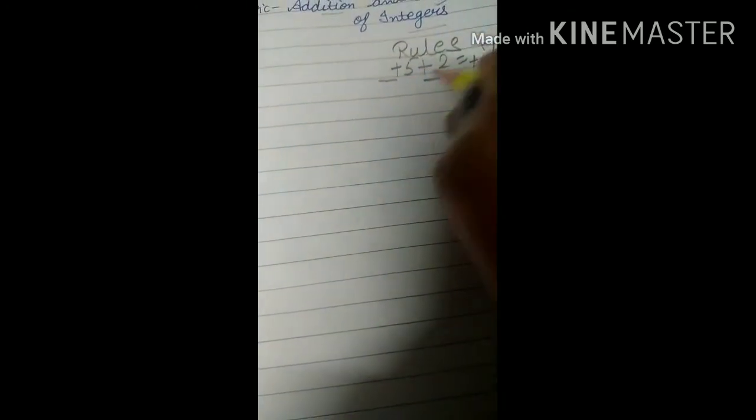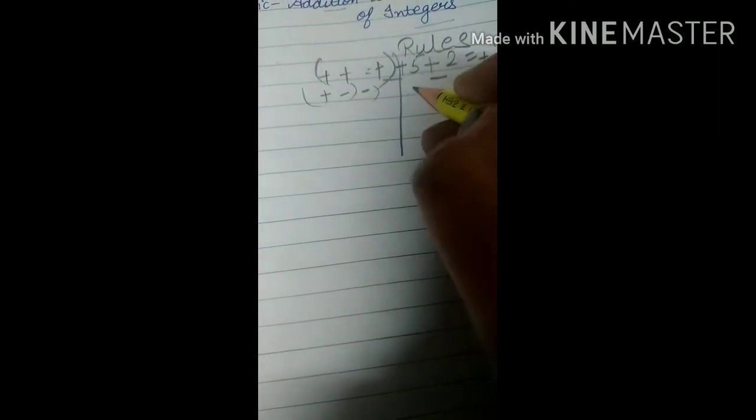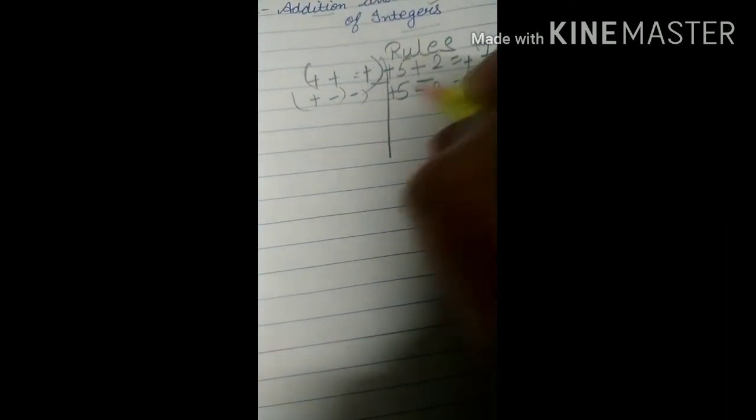Here we have some rules regarding addition and subtraction of integers. Please see here, my loving kids: whenever you add any two numbers — if both numbers are plus, like plus 5 and plus 2, plus plus always gives plus. And plus minus always gives minus.